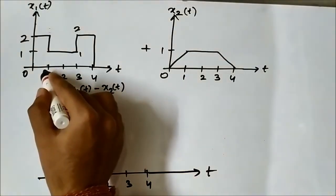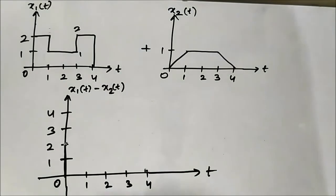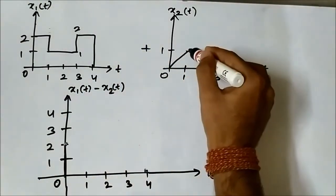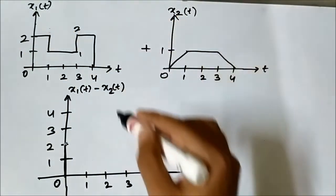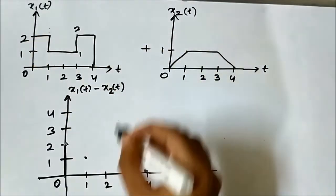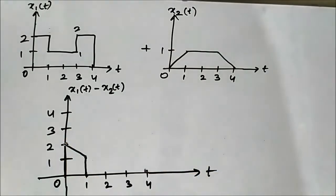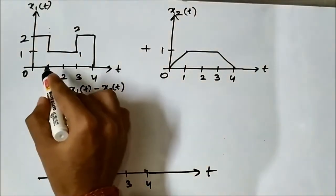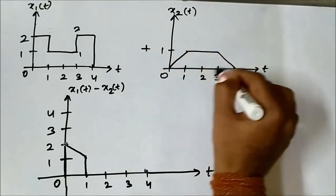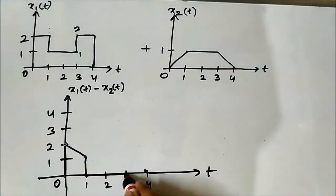At t equals 1, x1(t) has a sharp downward transition from 2 to 1, so we consider both values. At t equals 1, x2(t) is 1. For the initial value 2: 2 minus 1 equals 1. For the final value 1: 1 minus 1 equals 0. Then for the entire interval from 1 to 3, x1(t) and x2(t) are both 1, so x1(t) minus x2(t) equals 1 minus 1 equals 0.